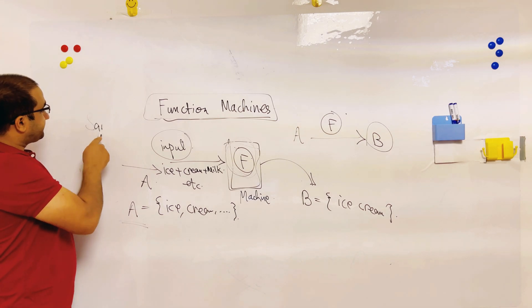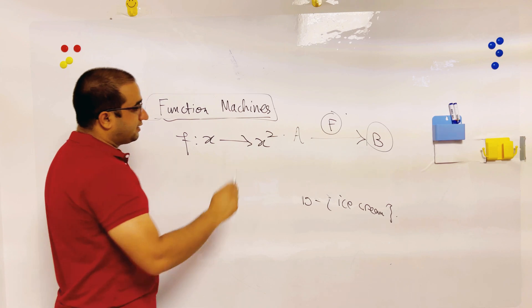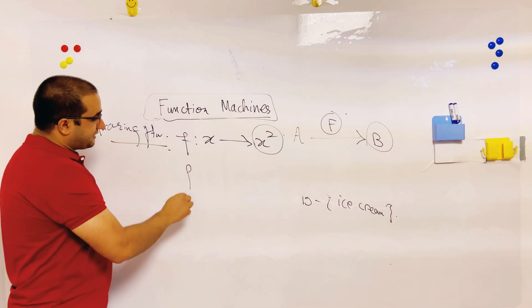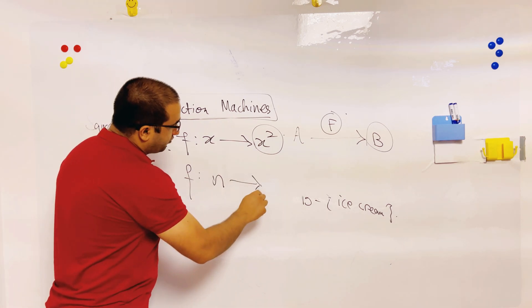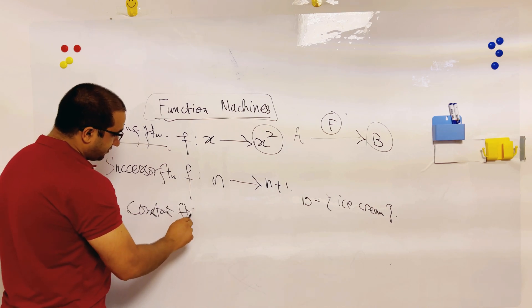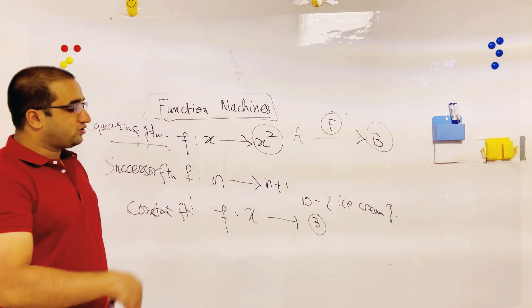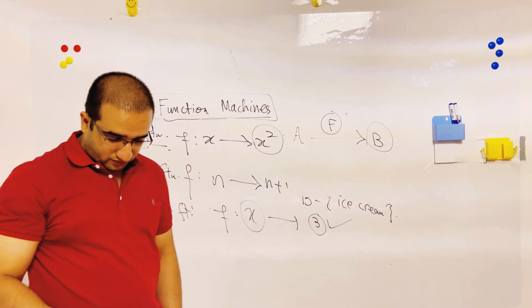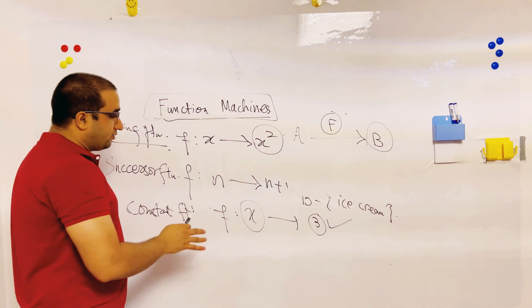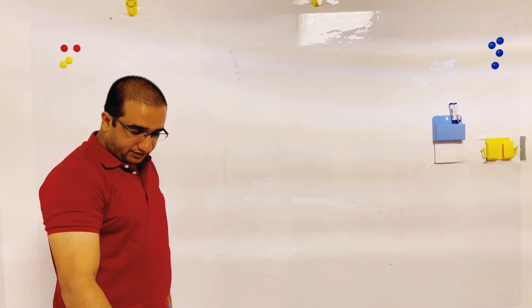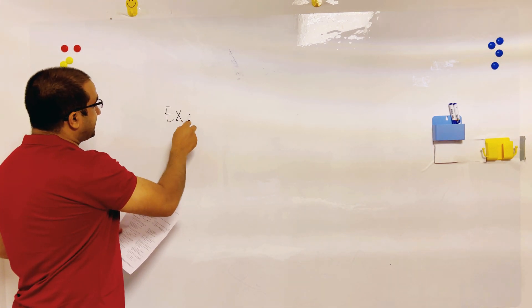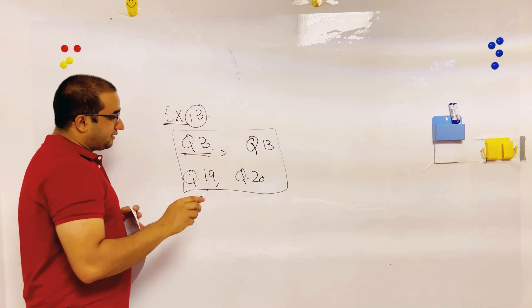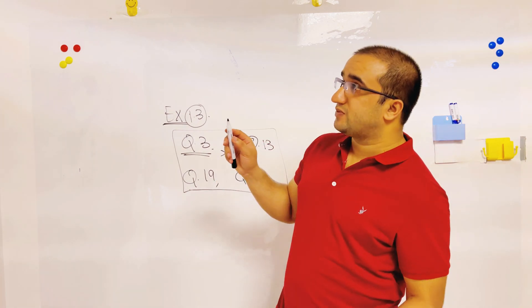So another way of understanding functions is to consider them as machines: whenever you put something in, the machine gives you an output. One example is a squaring function — a function that takes x and gives x squared. A successor function takes an element and gives x plus one. A constant function, whatever the value of x, always gives you the same constant value, say 3. For now, I am giving you an exercise — try them and send me the solutions before the end of this class.